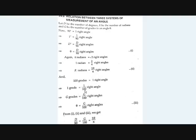Now in grades, 100 grades is equal to 1 right angle. So 1 grade is equal to 1 by 100 right angles. G grades means G by 100 right angles, so theta is equal to G by 100. From equations 1, 2, and 3, we get: D by 90 equals G by 100 equals 2R by pi.